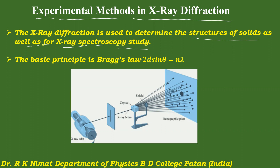The basic principle behind this technique is Bragg's law, which is 2d sinθ = nλ, where d is the interplanar spacing, θ is the glancing angle — the angle made by the crystal plane with respect to the incident X-ray — n is the order of reflection, and λ is the wavelength of incident X-rays. For first order reflection, the equation becomes 2d sinθ = λ, where n = 1.